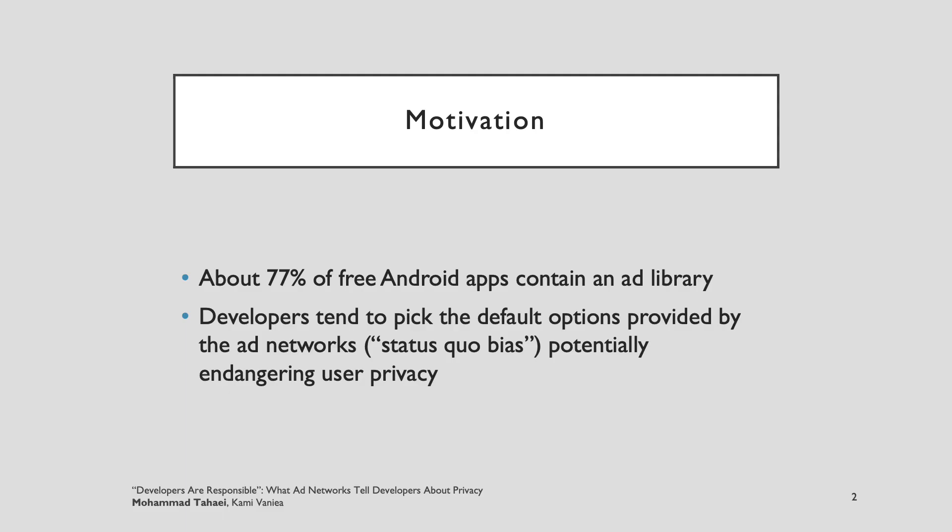The motivation behind this work comes from massive data collection by ad networks through mobile apps. For example, about 77% of free Android apps contain an ad library, and prior work shows that developers tend to pick the default options provided by the ad networks, potentially endangering user privacy.